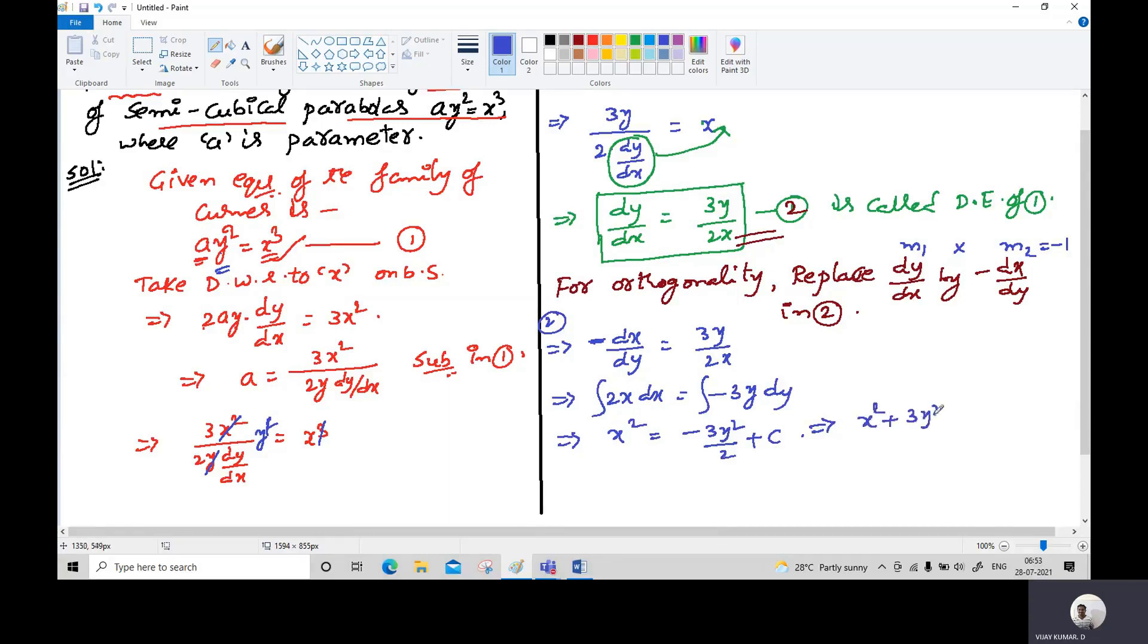So x² + 3y²/2 = c. This is the required family of orthogonal trajectories, which represents a family of ellipses. This is the required family of orthogonal trajectories of the given family.